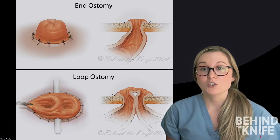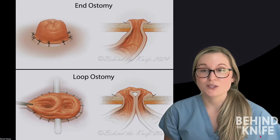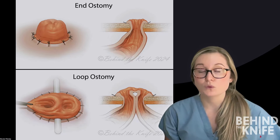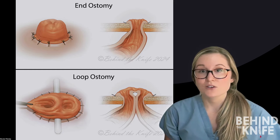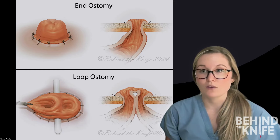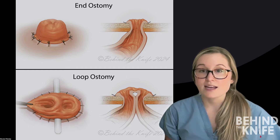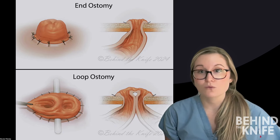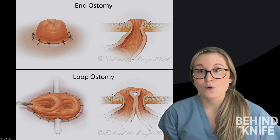Once we have established what organ was used to create our ostomy, we then need to determine if it's an end ostomy or a loop ostomy. End ostomies are created by completely transecting the bowel, then one end of the transected bowel is brought up through the abdominal wall to form the stoma. End ostomies only have one lumen.